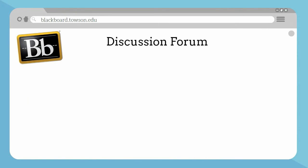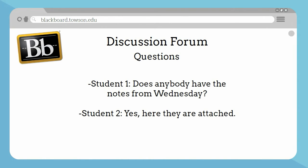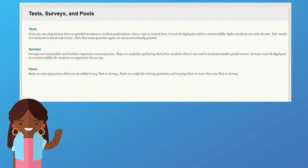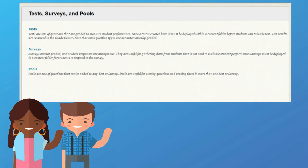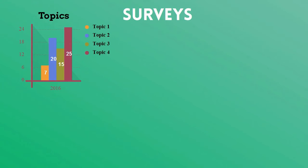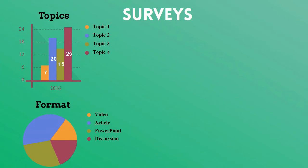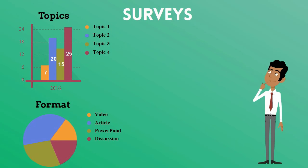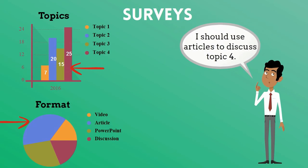For example, you could create a forum specifically designed for student questions. This can act as a place where students can speak with each other and have their questions answered. To obtain more formal feedback from your students, you could also create any number of surveys using the tests, surveys, and pools options within your course site. With custom surveys, you can find out directly from your students which topics were the most difficult or what presentation formats they enjoyed the most. Then you can use this data to guide you in future course development as you work to improve the students' experiences.